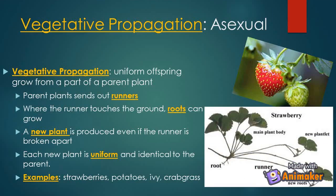Another kind of asexual reproduction is vegetative propagation. Vegetative propagation is the uniform offspring growth from a part of a parent plant. The parent plant sends out runners. Where the runner touches the ground, roots can grow. A new plant is produced even if the runner is broken apart. Each new plant is uniform and identical to the parent. Examples are strawberries, potatoes, ivy, and crabgrass.